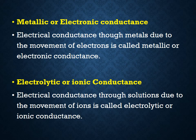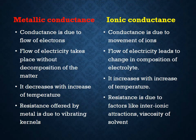Metallic or electronic conductance: electrical conductance through metals due to the movement of electrons is called metallic or electronic conductance. Electrolytic or ionic conductance: electrical conductance through solutions due to the movement of ions is called electrolytic or ionic conductance. Metallic conductance is due to flow of electrons, so it is also called electronic conductance. Ionic conductance is due to movement of ions produced by an electrolyte, so it is also called electrolytic conductance.